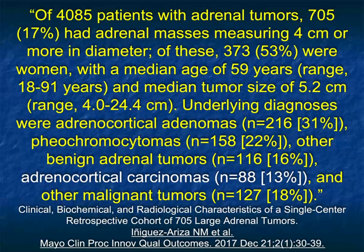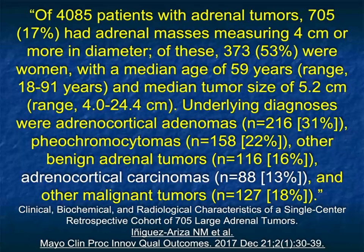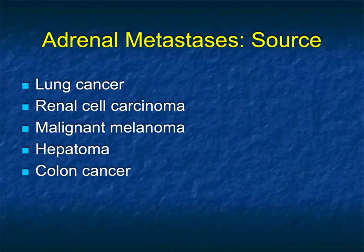Going back to that article from Mayo, only about 13% of their large adrenal masses were ACCs. ACCs are often in younger patients, and it's an aggressive carcinoma, often in younger females. Besides surgery there's really no good therapy — there's one chemo agent, mitotane, but that really doesn't work all that well.